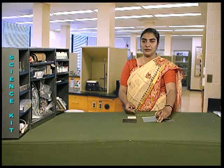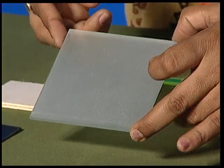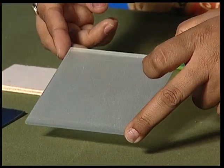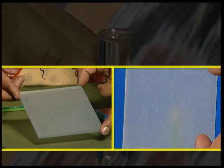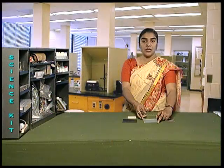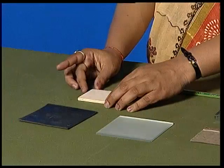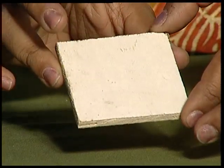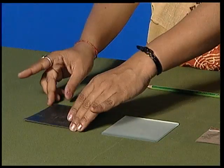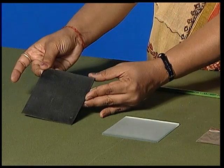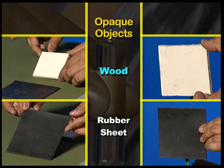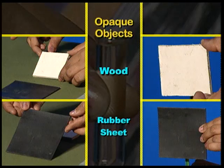There are materials through which we can see but not clearly. Such materials are called translucent. There are also materials through which we cannot see at all. A block of wood and a sheet of rubber are such materials. These materials through which we cannot see at all are called opaque.